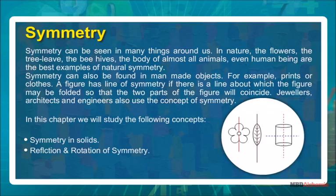Symmetry can be seen in many things around us. In nature, the flowers, the tree leaves, the beehives, the body of almost all animals, even human beings are the best examples of natural symmetry. Symmetry can also be found in man-made objects, for example, prints or clothes. A figure has line of symmetry if there is a line about which the figure may be folded.